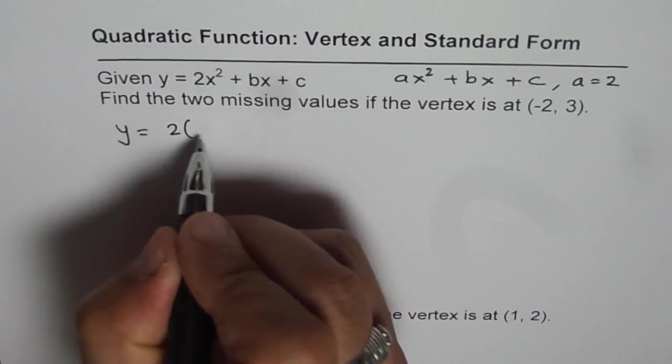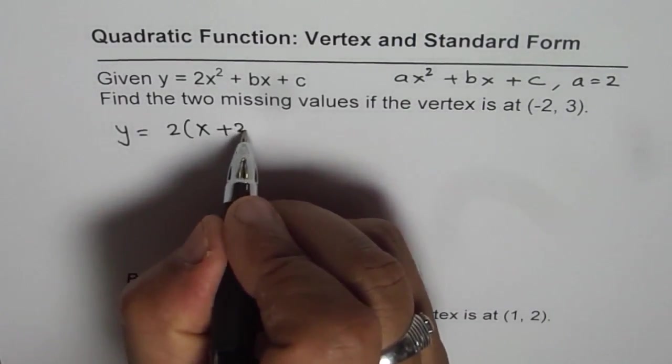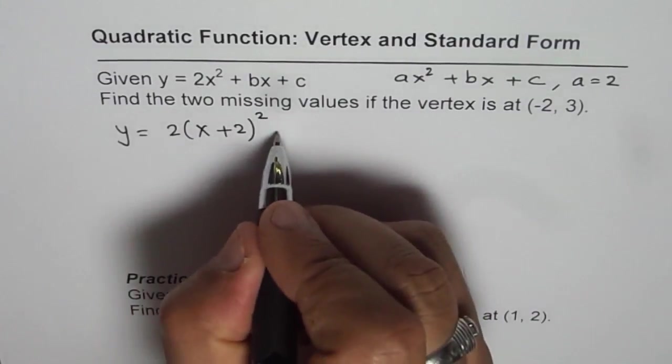So write this value of 2, x minus (-2), that means plus 2, whole square plus 3.